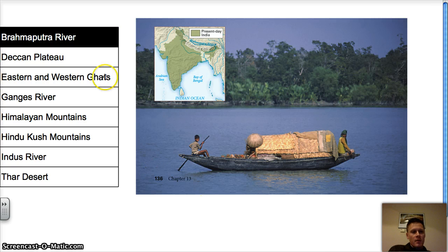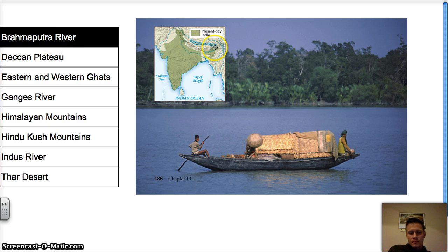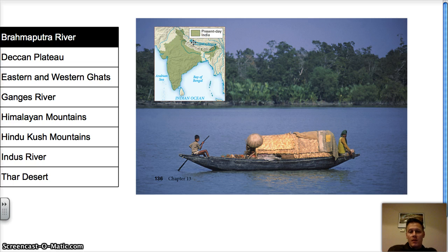The first one is the Brahmaputra River, right here. The Brahmaputra River runs through the Himalayas along the northern border. It carries rich minerals and leaves them in the valley. It also meets with the Ganges River in the plains, providing rich soil great for farming.